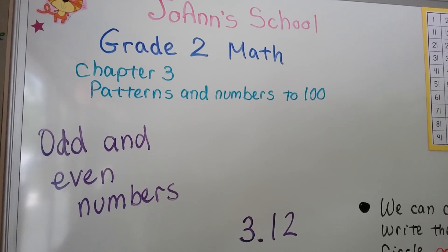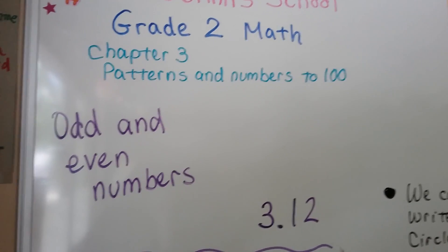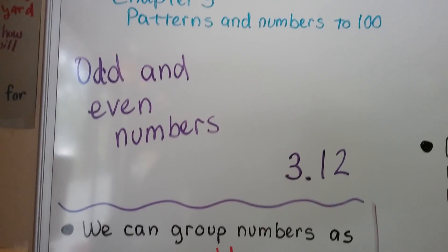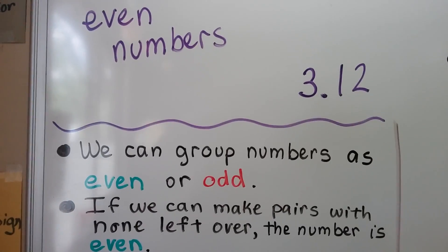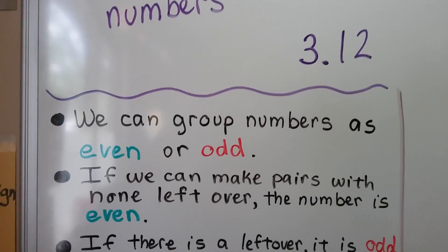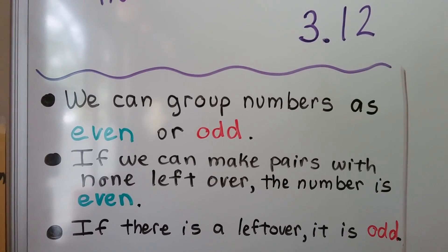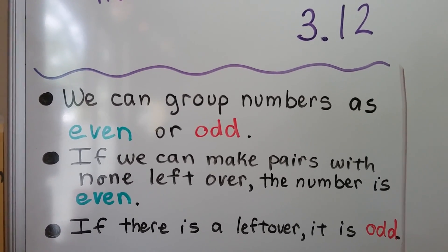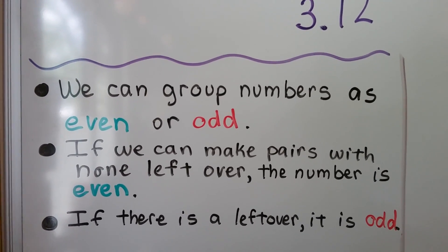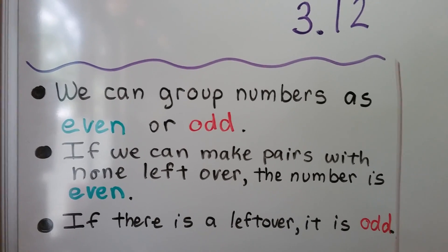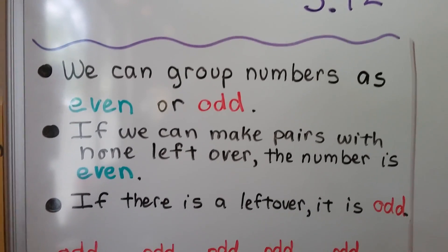Odd and Even Numbers, Lesson 3.12. We can group numbers as even or odd. If we can make pairs with none left over, the number is even. If there is a leftover, it is odd.